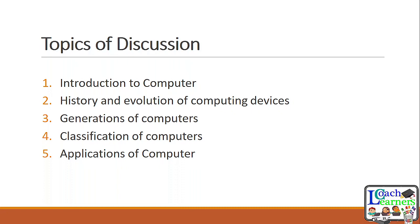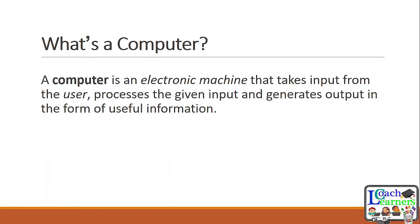What is a computer? You can't really determine the history or talk about computer applications without first understanding what a computer is. There are a wide variety of definitions. Basically, a computer is an electronic machine that takes input from the user — it could be characters typed into a document — processes that particular input, and generates output in the form of useful information.